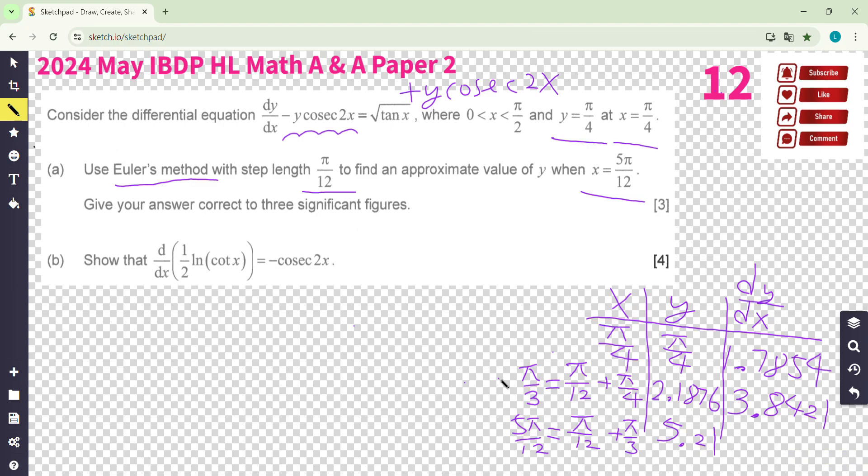For part b is a show question, so you start from the left hand side where you differentiate it. It becomes one over two cotangent x, and then differentiate cotangent is negative cosecant, one over two cotangent square x.